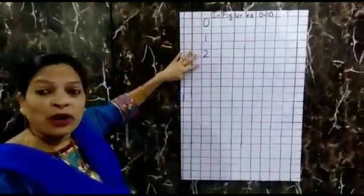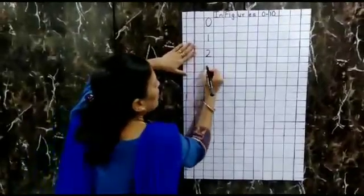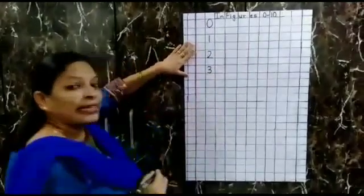Very good. Now after 2, what number comes? 3. Yes. Draw a curve and from the center draw one more curve. That makes number 3.